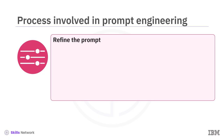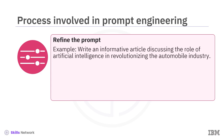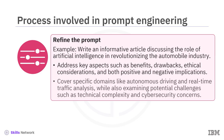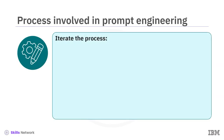Step 5: Refine the prompt. Using the knowledge acquired through testing and analysis, it's now appropriate to modify the prompt. This might include enhancing its specificity, incorporating additional context, or rephrasing. The initial prompt can be refined as follows: 'Write an informative article discussing the role of artificial intelligence in revolutionizing the automobile industry. Address key aspects such as benefits, drawbacks, ethical considerations, and both positive and negative implications. Cover specific domains like autonomous driving and real-time traffic analysis, while also examining potential challenges such as technical complexity and cybersecurity concerns.'